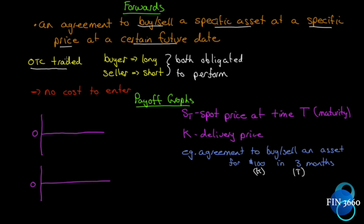Forward contracts are OTC-traded over the counter. If a forward is exchange-traded, it is simply called a future — that's the only difference between forwards and futures. When you hear 'forward,' it's OTC-traded; when you hear 'futures,' it's a forward agreement that happens to be exchange-traded. That's all.